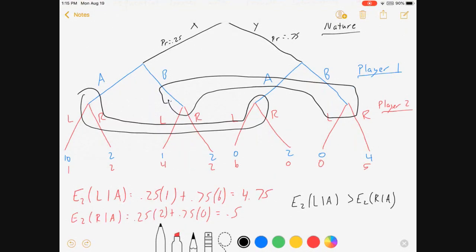So what I get from this is that for player two, if they see player one choosing A, moving left has a higher average payoff than moving right. And so player two will respond to an A with an L, which means we know their strategies if player one chooses A. Coming out of that information set, moving left is better than moving right on average.